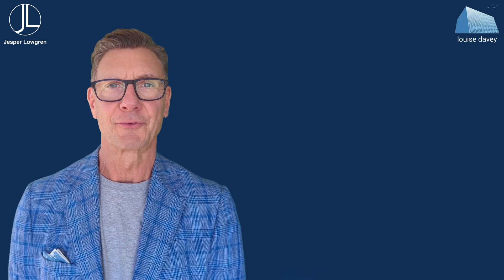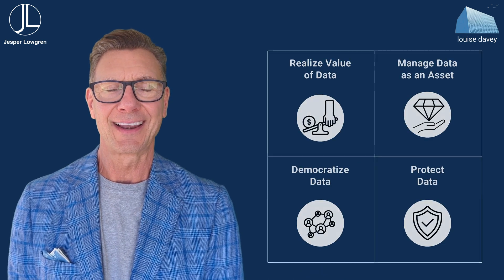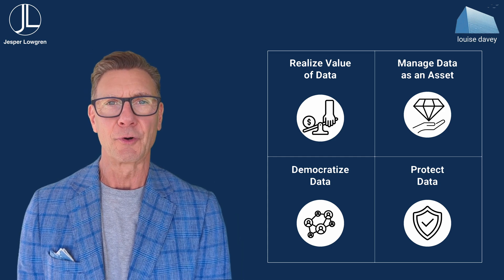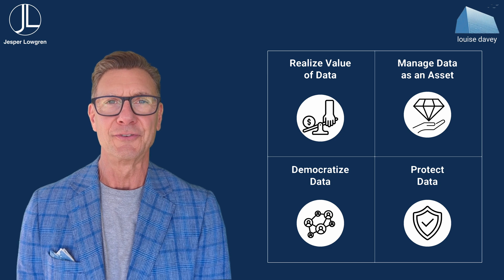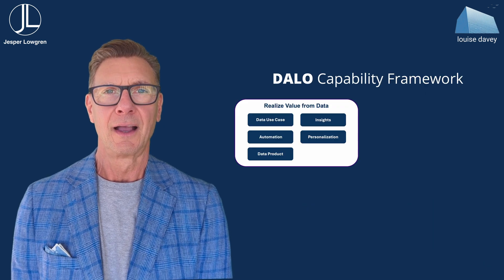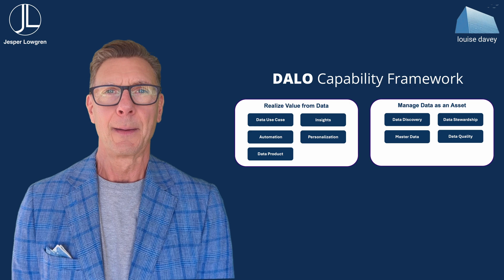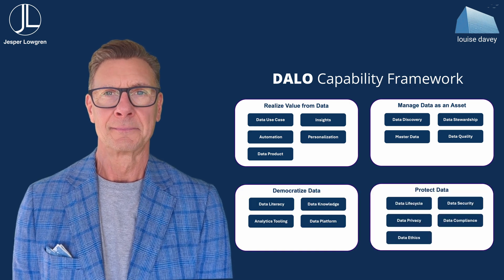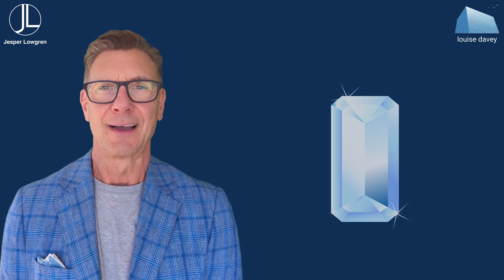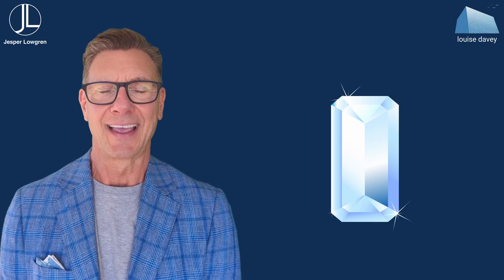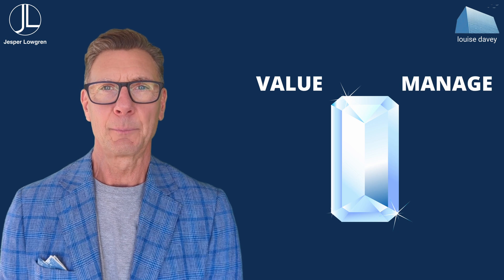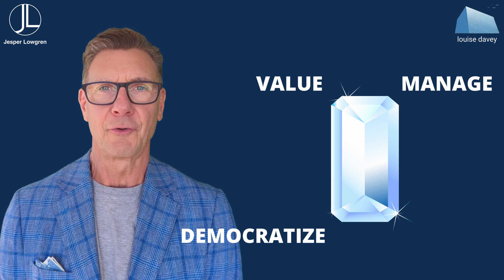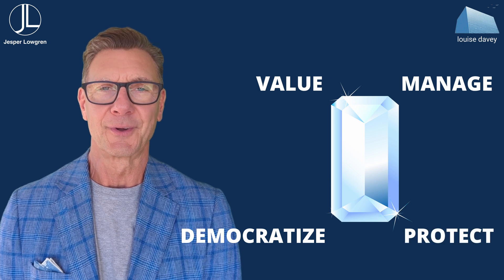This concludes our two-part introduction to the DALO Data Strategy Framework. In summary, DALO consists of four capability groups that each explore a unique side of data strategy: realize value of data, manage data as an asset, democratize data, and protect data. A simple analogy is that of a diamond — we want to understand the value of the diamond, we want to cut it and polish it to increase its value, we want as many people as possible to know about it, but we don't want anyone to steal it.